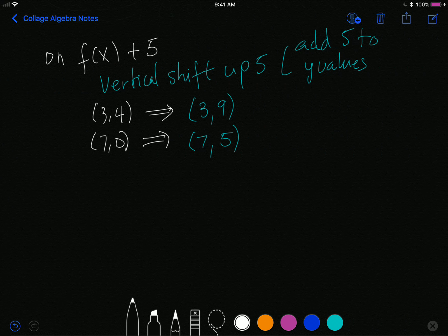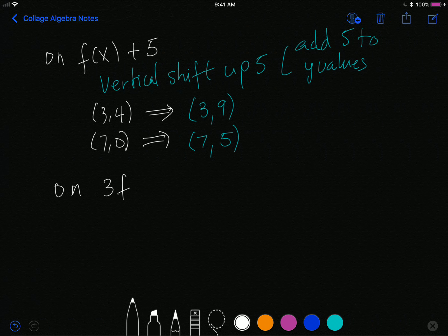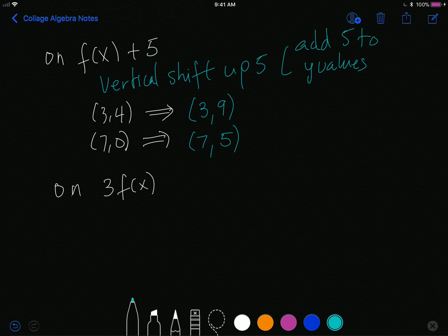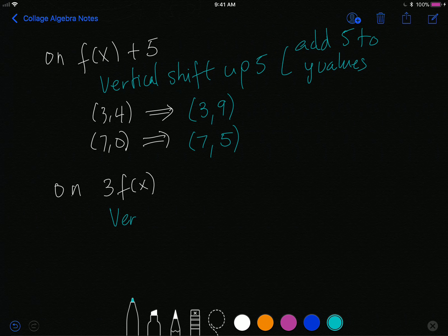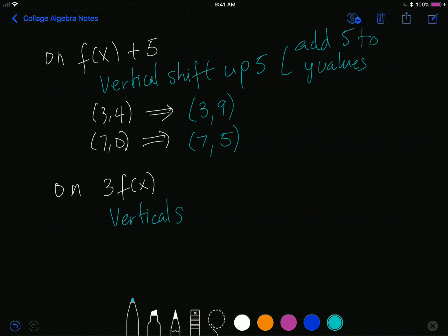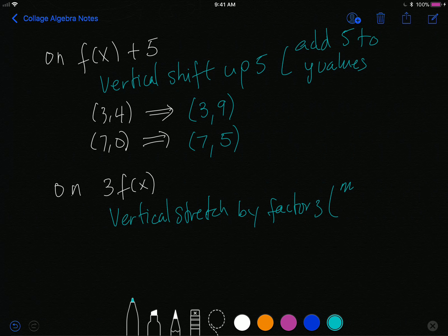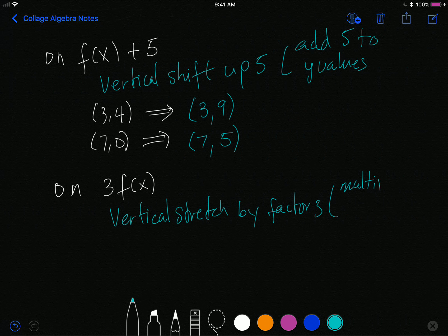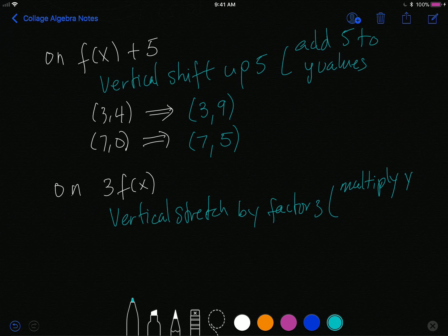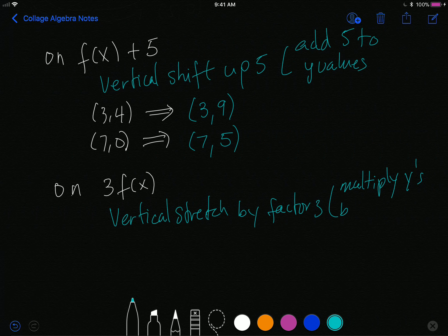What are the kinds of transformations they can have? They can multiply by a constant. And so, say, 3f(x). This right here is a vertical stretch by a factor of 3, and this would be to multiply the y's by 3.